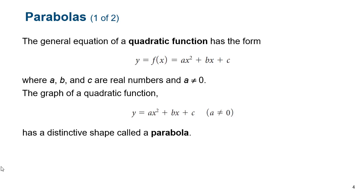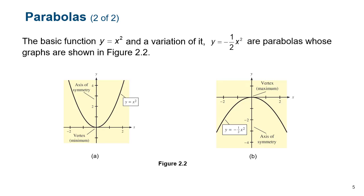It's a very distinct function — you've seen them all before. Anytime you see these horseshoe things, that's a parabola. We start with the most basic of them, which is just y equals x squared. That's our parabola centered at (0, 0), so the vertex is right there at (0, 0), and it's symmetrical around the y-axis. If you cut it in half, these two halves look exactly the same.